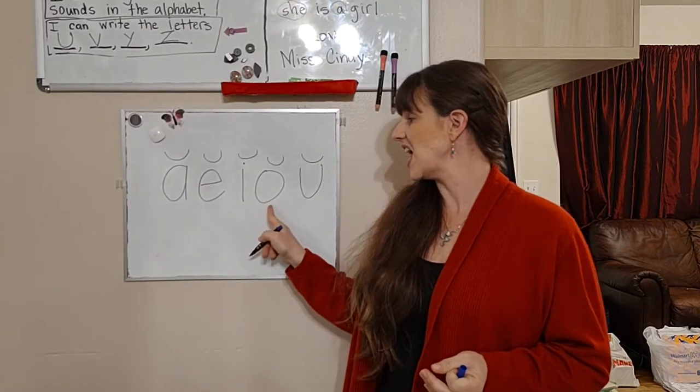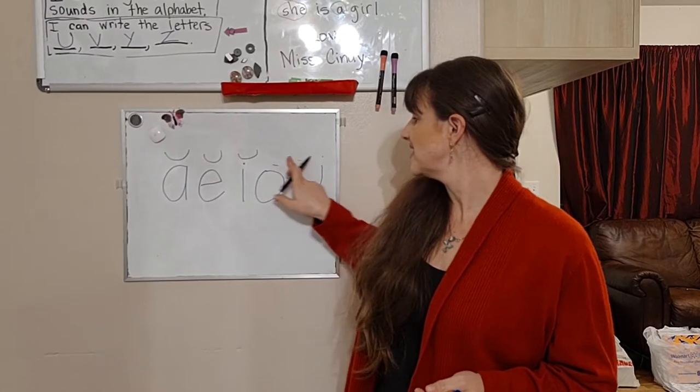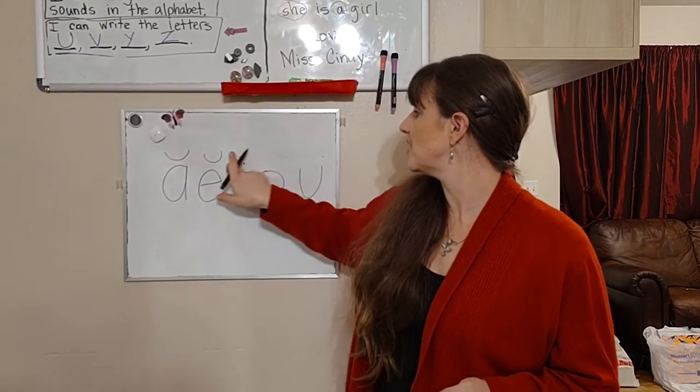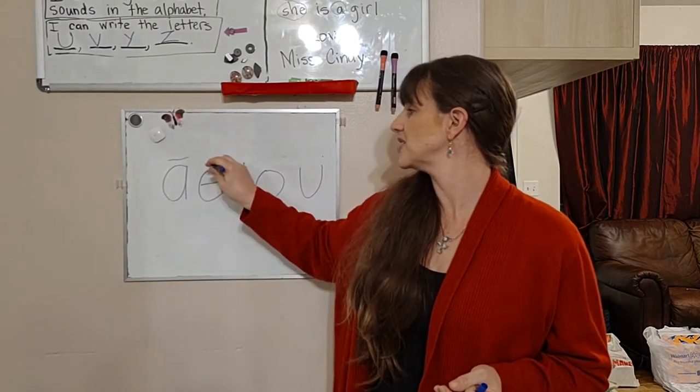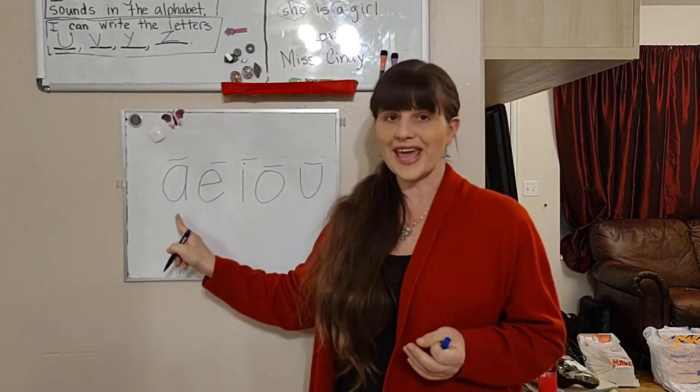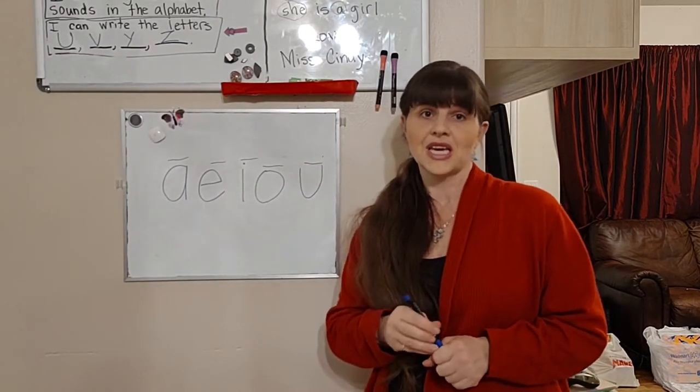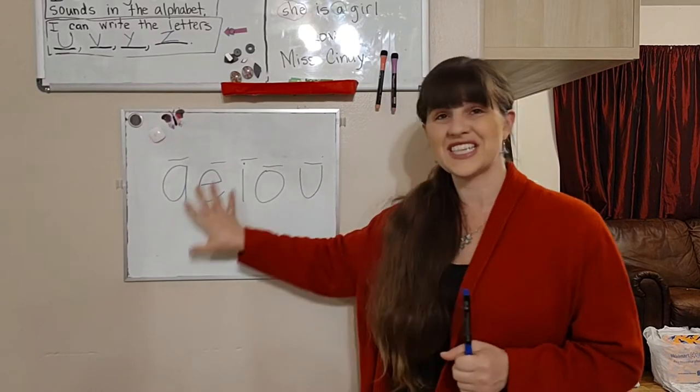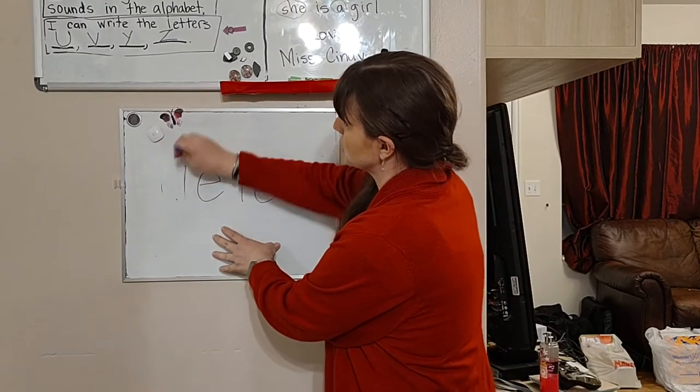Now if we draw a line over the top, then the vowel will actually say its name. That's a clue that it says its name. So a, e, i, o, u. Vowels are the only letters that do that, that they actually say their names inside words.